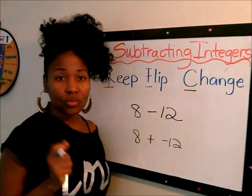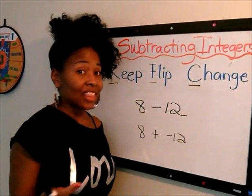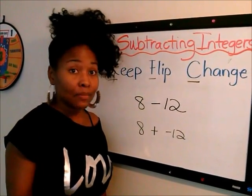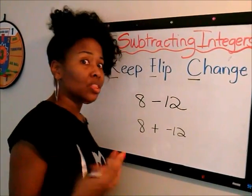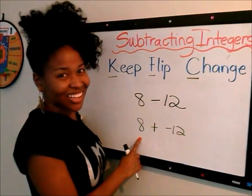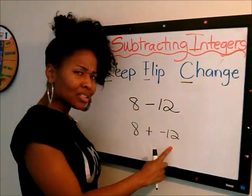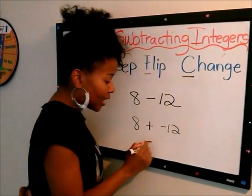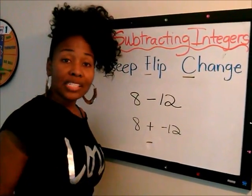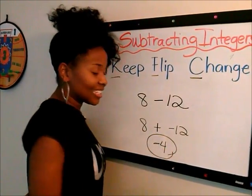Now we have a war situation. Remember in the previous video, we said if we have two numbers that we're adding and their signs are different, it becomes a war. We have to figure out which team — the positive team or the negative team — will win the war. The positives have eight soldiers on their team, but the negative team has 12 soldiers. So the negatives win. My answer is going to be negative, and I just subtract them: 12 take away eight is four. The negative team wins. The answer is negative four.